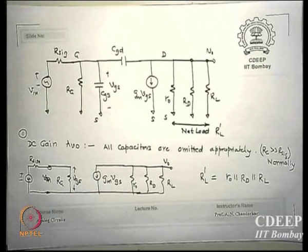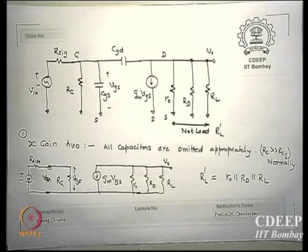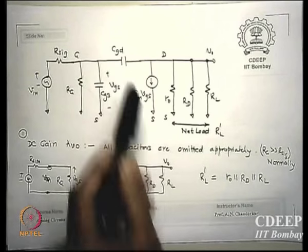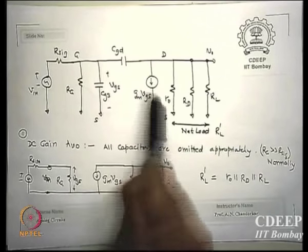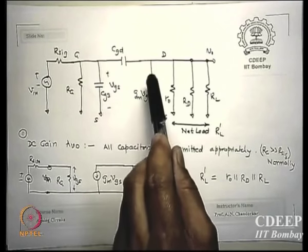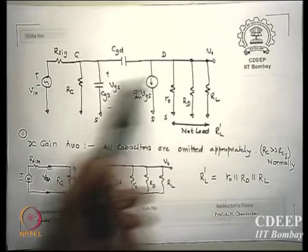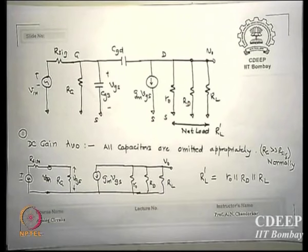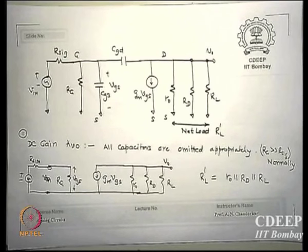CGS can be two-thirds of C_ox × W × L in saturation or full C_ox otherwise. There is also CGD, the gate-to-drain capacitance, which is due to the overlap capacitance — W × L_overlap × C_ox. There is a current source GM·VGS directed downward for 180° phase shift, output resistance R0, drain resistance Rd, and load RL. The net load is RL' = R0 ∥ Rd ∥ RL.